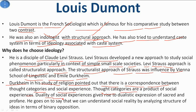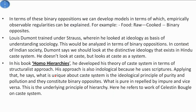Categories are a product of social experience. The duality of social experience gives rise to dualistic expressions of sacred and profane — every perspective we see always has a dualistic expression; something is sacred as well as profane. He goes on to say that we can understand social reality by analyzing the structure of ideas in terms of binary oppositions — one thing is positive, another is negative. For example, food has two expressions: raw and cooked — binary opposites.